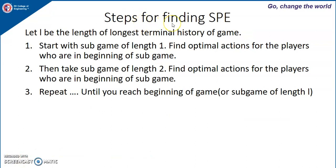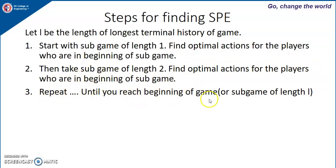Let us see how to find the sub-game perfect equilibrium and the various steps involved. Let l be the length of the longest terminal history. Step 1: start with the sub-game of length 1 and find the optimal actions for the players at the beginning of that sub-game. Then take the sub-game of length 2 and find the optimal actions for the players at the beginning of that game. Repeat this process until you reach the beginning of the game, completing the sub-game of length l.